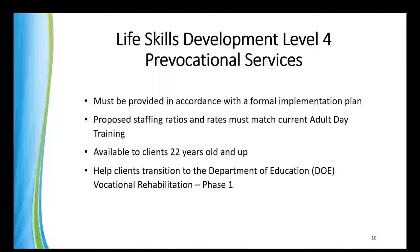All pre-vocational services should be reviewed as a component of the individual's person-centered services and support plan no less than annually, or more frequently as necessary or requested by the individual. The staffing ratios for this new service must match current Adult Day Training services: 1 to 1, 1 to 3, 1 to 5, or 1 to 6 through 10. Participation in pre-vocational services is not a required prerequisite for individual or small group-supported employment services provided under the waiver.